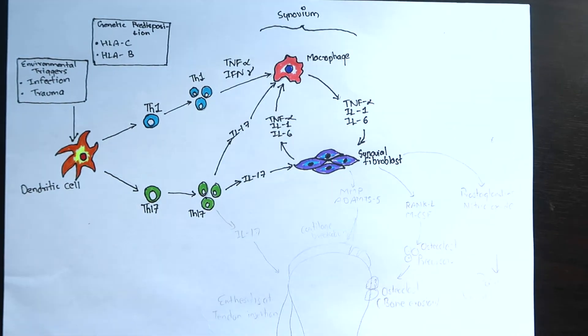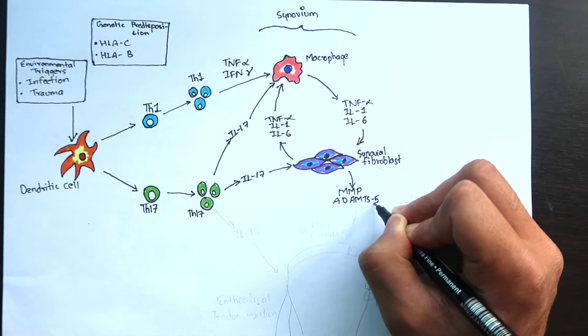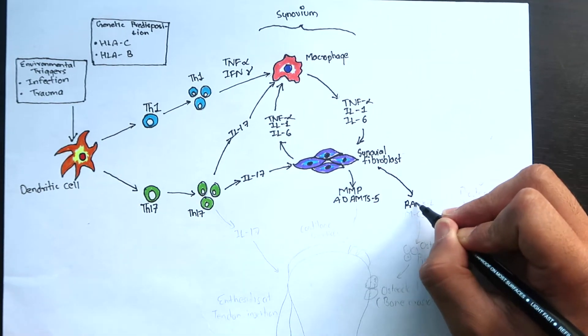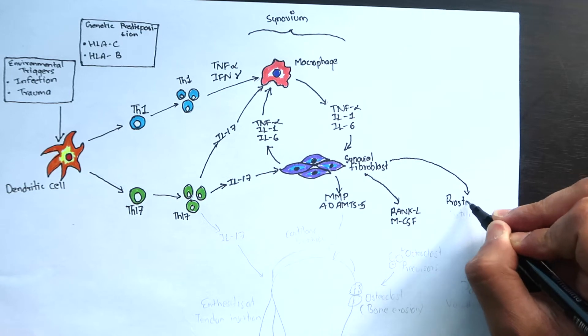The activated synovial fibroblasts can produce many proteins such as matrix metalloproteinase and agrikinase, rank ligand and MCSF, prostaglandins and nitric oxide.